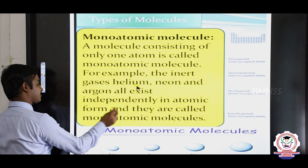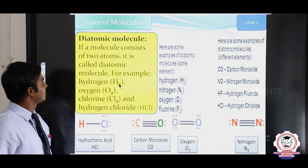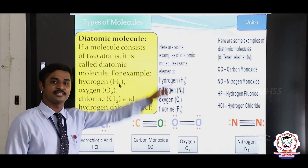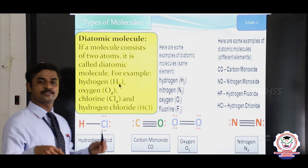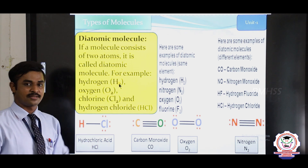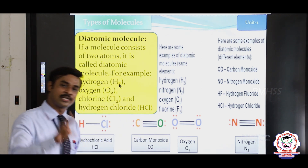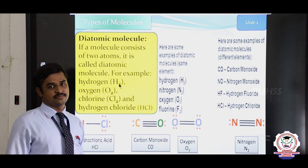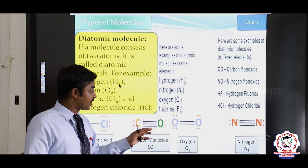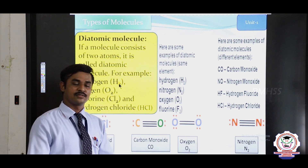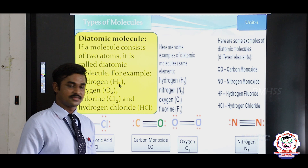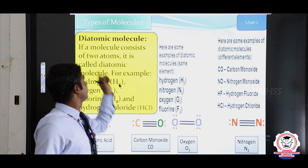We can also see the diatomic molecule. The number 2 is represented by the word 'di'. So a diatomic molecule contains 2 numbers of atoms or 2 elements. For example, HCl contains one hydrogen atom and one chlorine atom, so HCl contains 2 atoms. CO, carbon monoxide, also contains only 2 atoms — one carbon and one oxygen. The oxygen molecule O2 also contains 2 atoms, both oxygen. We only consider the number of atoms present in the molecule, so any molecule with 2 atoms is a diatomic molecule.